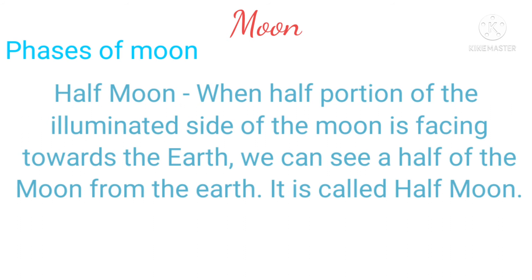Let us know why the half moon occurs. When half of the illuminated side of the moon is facing towards the earth, we can see half of the moon from the earth. This is called the half moon.